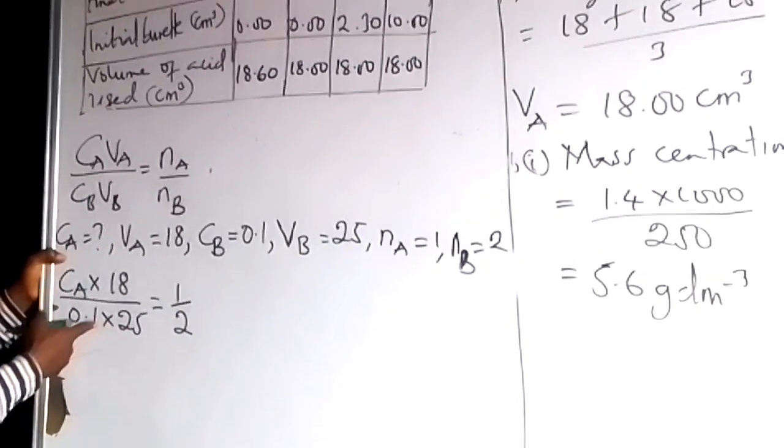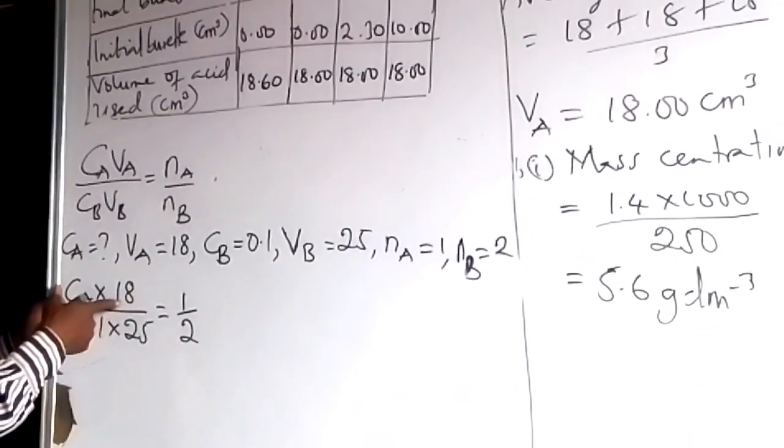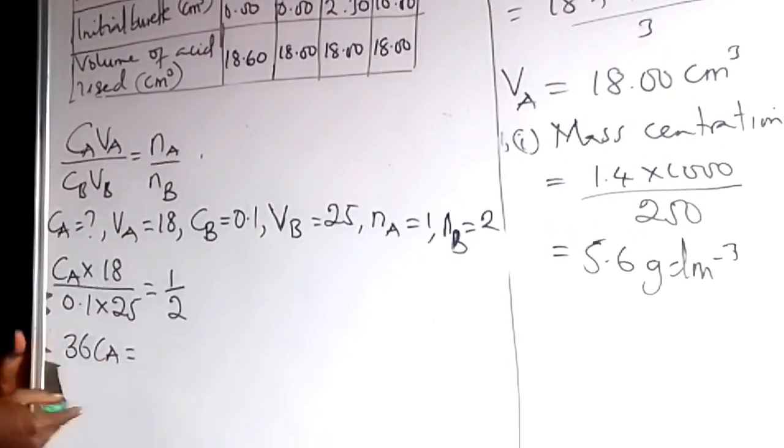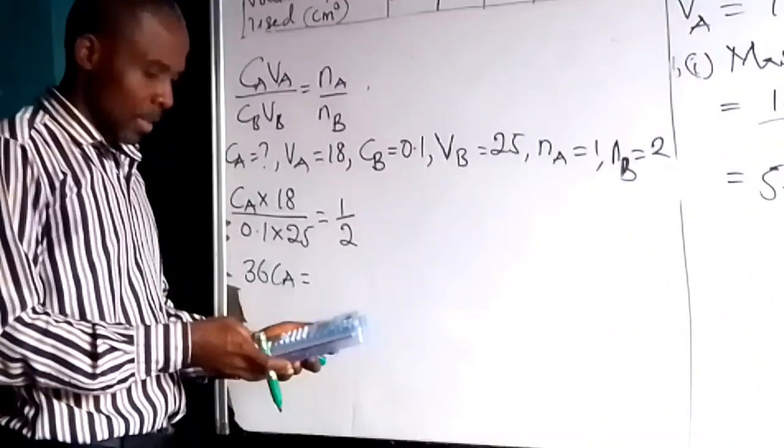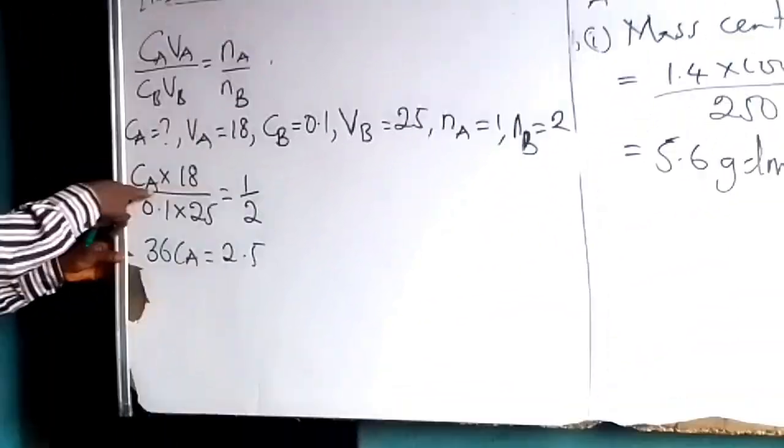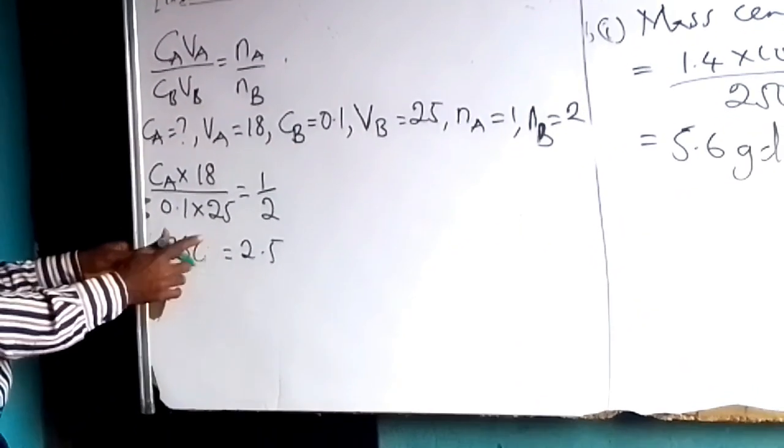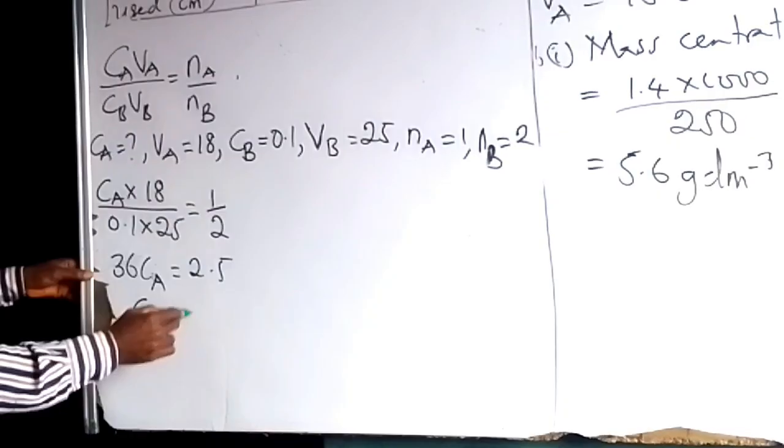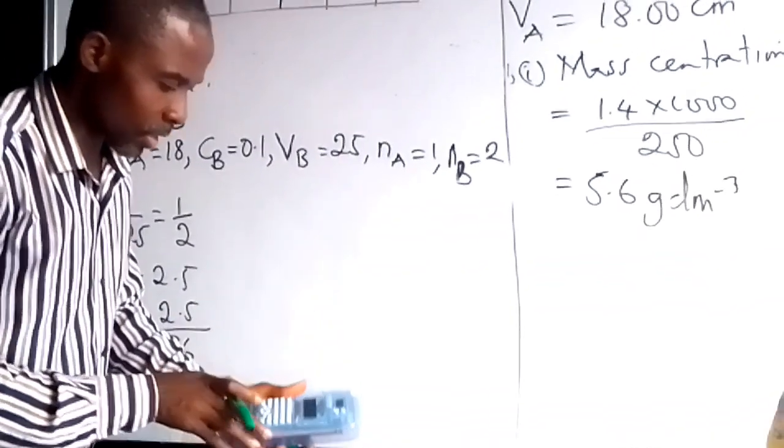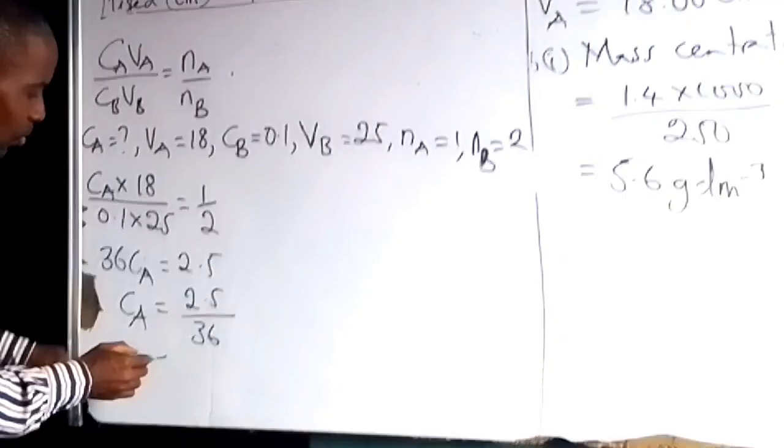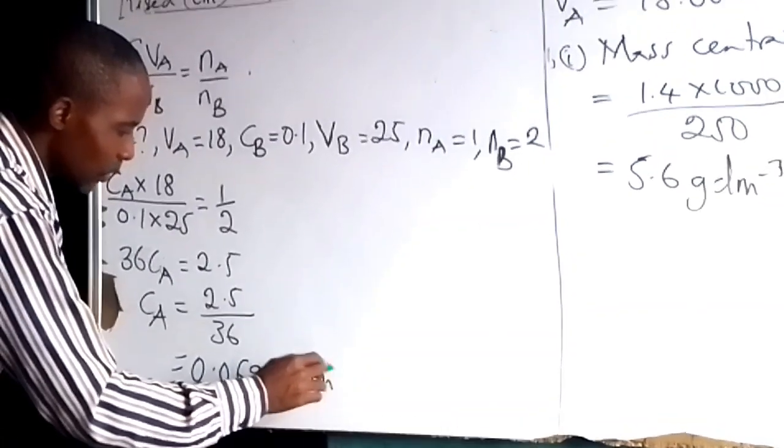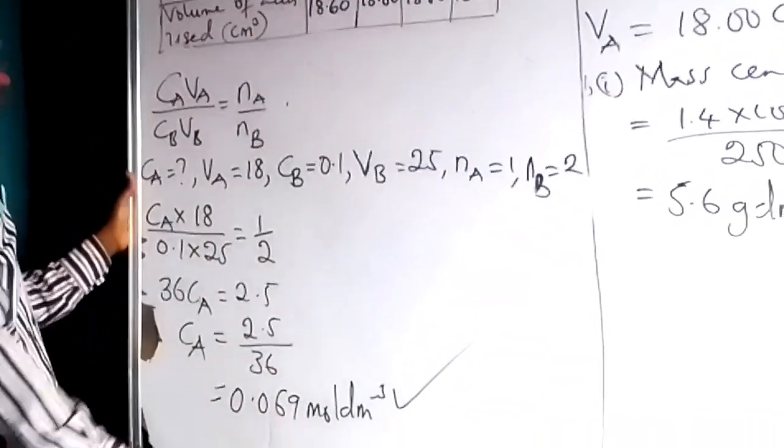So now we say CA we don't know times VA 18 over CB 0.1 times volume of base 25. Number of moles of acid 1, number of moles of base 2. So we cross multiply. 2 times 18 is 36 CA. So this is CA equal to 0.1 times 25, that will give us 2.5. Then 2 times this times CA, 36 CA. So the concentration of acid is now 2.5 over 36, divided by 36 gives us 0.0694 moles per dm³. So this is the answer.